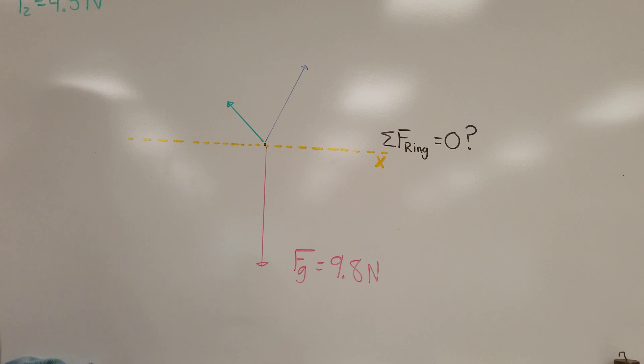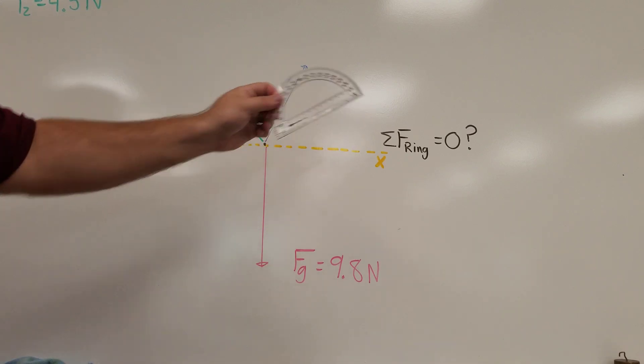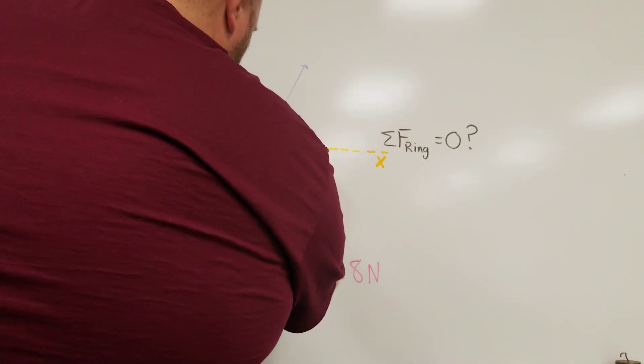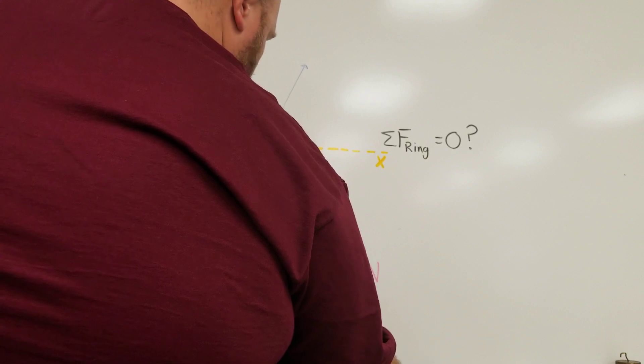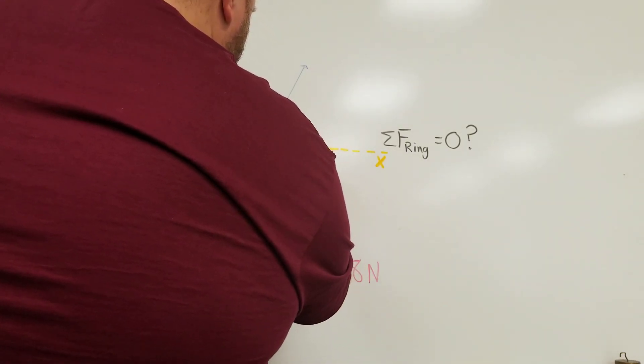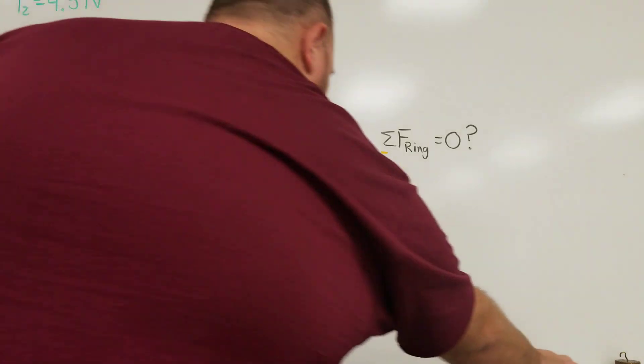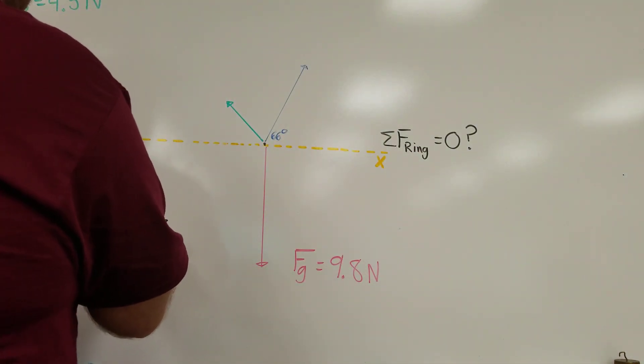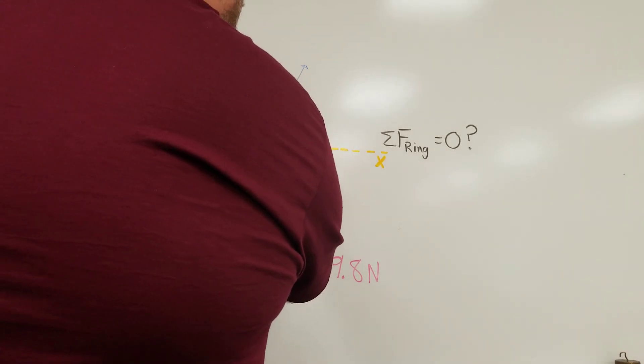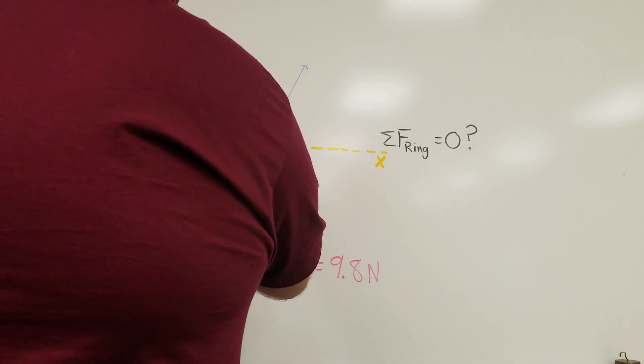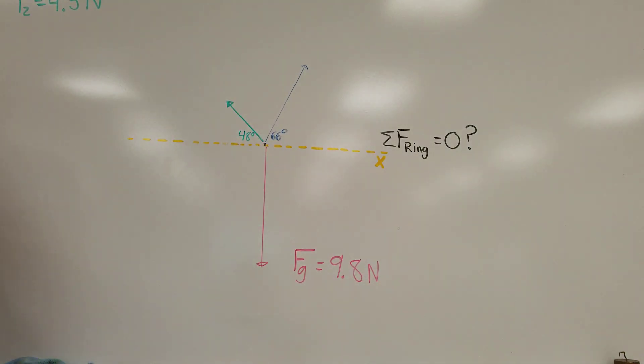So right now my vector diagram looks like that where I've got a red force going down, a blue force up into the right, and a green force up into the left. So the first thing that I'm going to do is figure out what this angle is. And for that I'm going to use a protractor. That angle looks to be 66 degrees. And then the angle on the other side relative to T2, it looks like it is 48 degrees. Just like all measurements of physics there is going to be a little bit of error involved, a lot of it is just due to the thickness of the markers I'm working with.